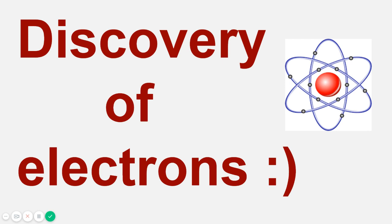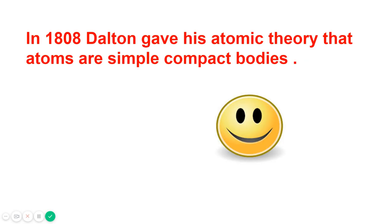This video deals with the discovery of electrons, a very important discovery in the history of mankind. First, let's see the discovery of the atom. In 1808, Dalton gave his atomic theory that atoms are simple compact bodies. So it was a Daltonian concept that atoms are simple compact bodies.